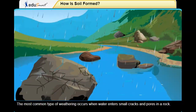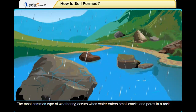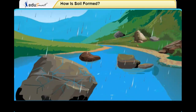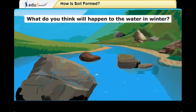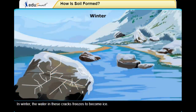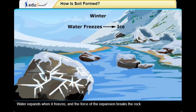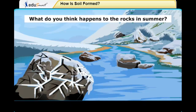The most common type of weathering occurs when water enters small cracks and pores in a rock. What do you think will happen to the water in winter? In winter, the water in these cracks freezes to become ice. Water expands when it freezes, and the force of the expansion breaks the rock.